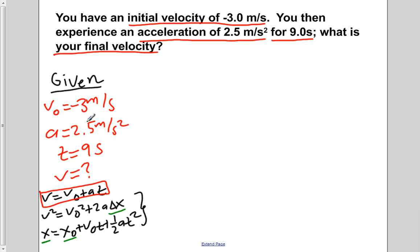We can also check that this is the one we can use from our givens. We're given initial velocity, acceleration, time, and we have one unknown of the final velocity, which we have.